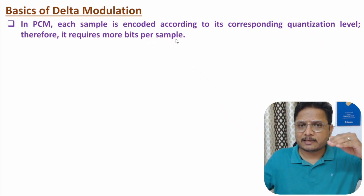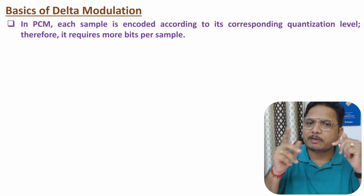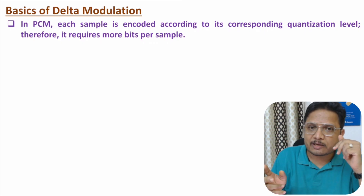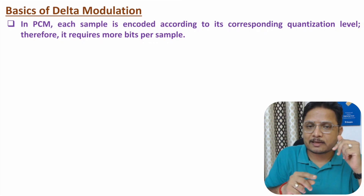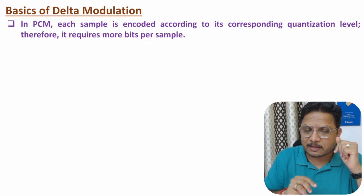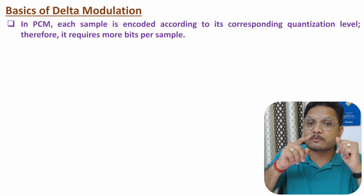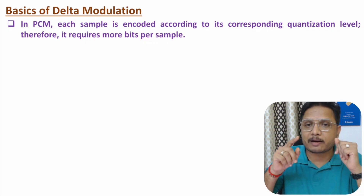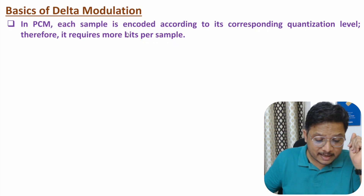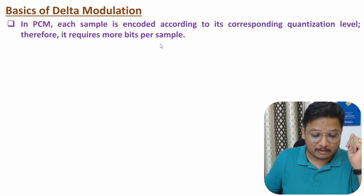The reason is, with full swing voltage, there are so many levels. Based on number of levels, per sample, there will be a number of bits. If you have n number of bits, then total levels will be 2 to the power n. So in PCM, we encode each and every sample, which is why we need more bits per sample.